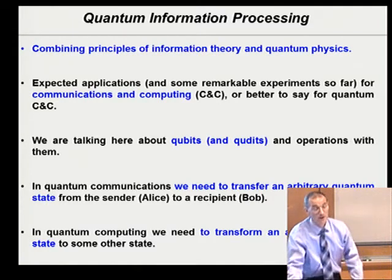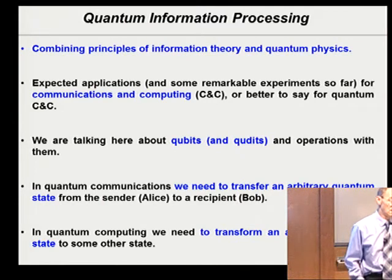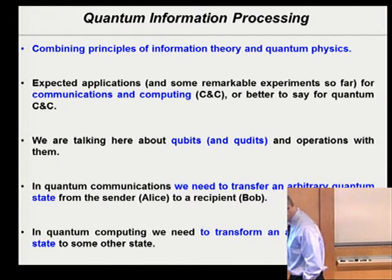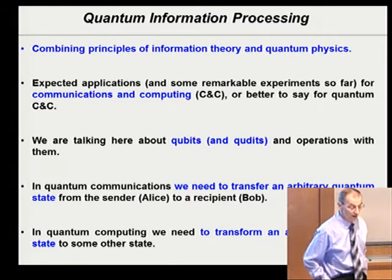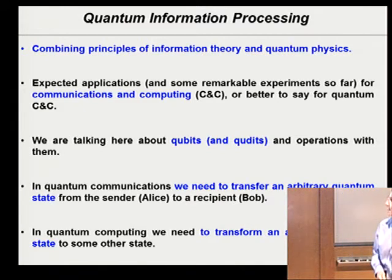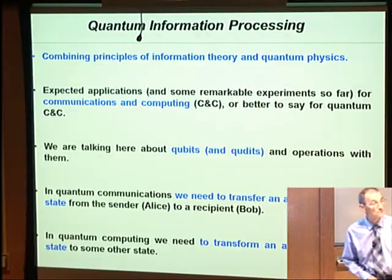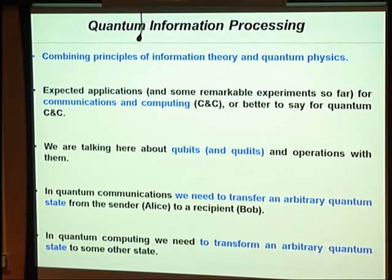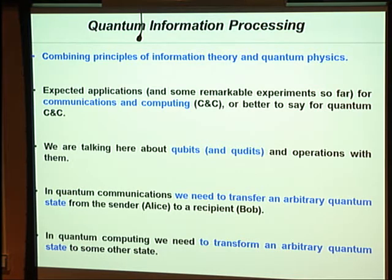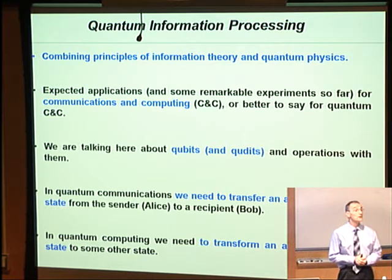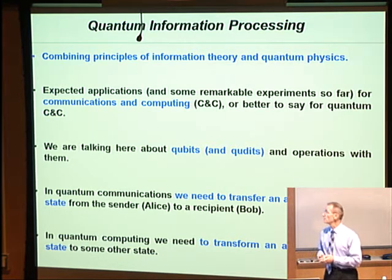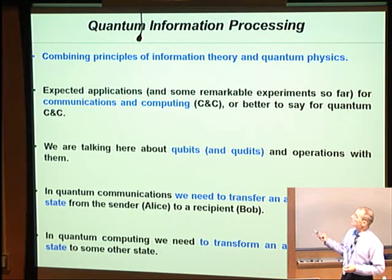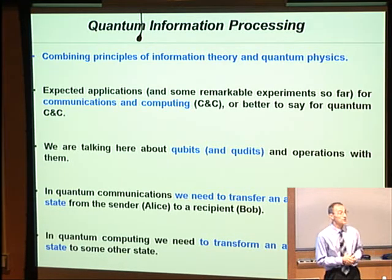What is quantum information processing? It is some kind of combination of information theory and quantum mechanics, or quantum physics — which is ideal for people from the College of Optical Sciences, as you have both flavors. With respect to that, the application is for both communication and computing — the same principles. So we are talking about quantum communication and computing.